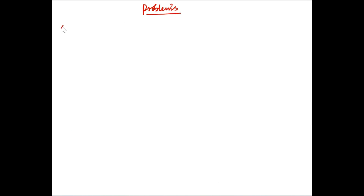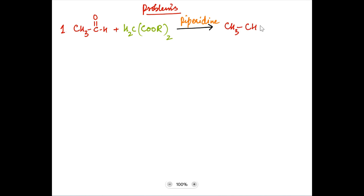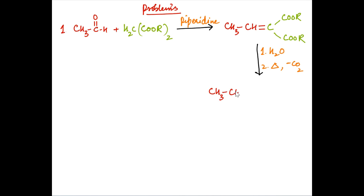Let us do some problems on this reaction. In the first case, acetaldehyde is treated with an active methylene compound in the presence of base piperidine. The two molecules condense with loss of a water molecule to form an alpha-beta unsaturated dicarbonyl compound. Upon hydrolysis, esters are changed into carboxylic acid groups. The 1,3-dicarboxylic acid upon heating is decarboxylated to form an alpha-beta unsaturated carboxylic acid. Remember that the presence of the highly reactive methylene compound prevents self-condensation of the aldehyde if it has alpha-hydrogen.